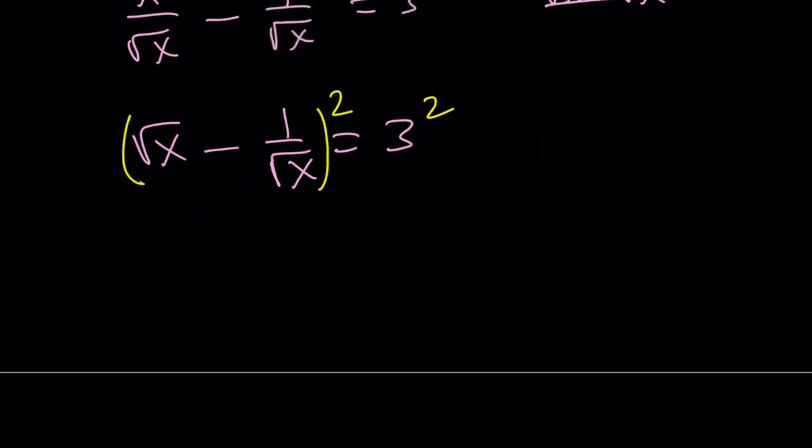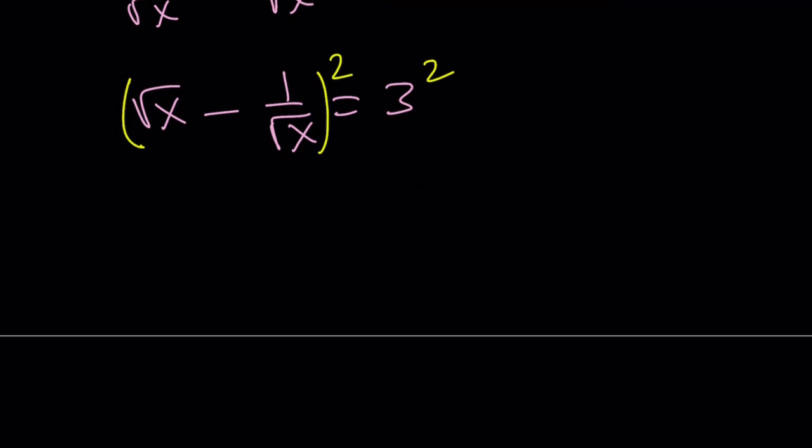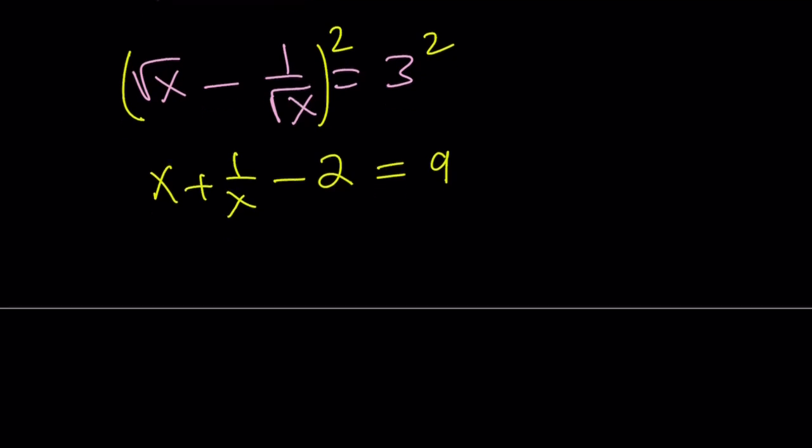If I square both sides, I'm going to get something nice. a squared plus b squared minus 2ab. The good thing about these kinds of expressions is 2ab, the square root of x cancels out, so we just end up with a minus 2, which is really cool. And that is 9. Add 2 to both sides, you get x plus 1 over x, which is cool. But I do need x squared plus 1 over x squared. So let's go ahead and square one more time.